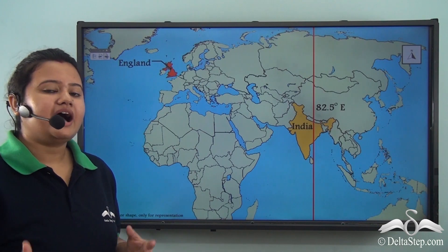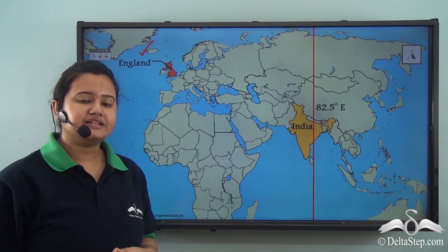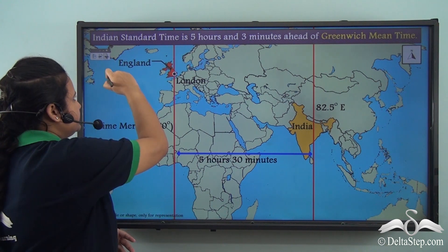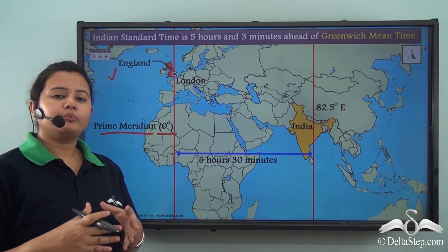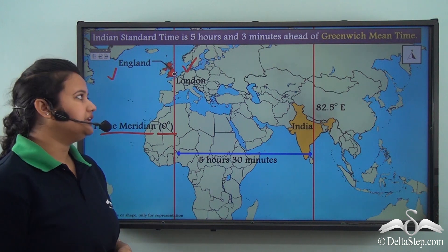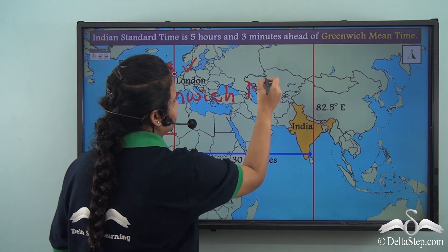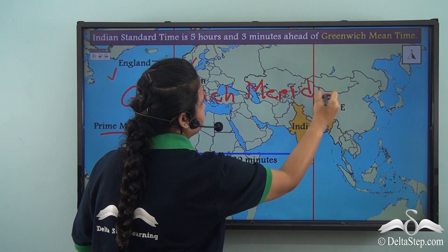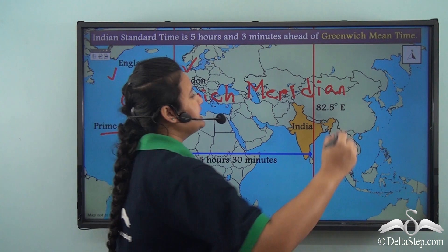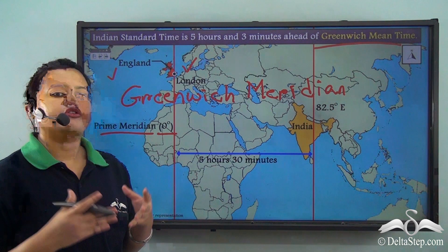Now let us compare IST or Indian Standard Time with that of another country — England. For this purpose, we need to identify the longitude that passes through England. The longitude that passes through England is 0 degrees longitude, or the prime meridian. To be more precise, the prime meridian specifically passes through Greenwich, London. Therefore, another name for the prime meridian is the Greenwich meridian. The local time of the prime meridian or Greenwich meridian is known as GMT or Greenwich Mean Time, and this GMT determines the standard time of England.